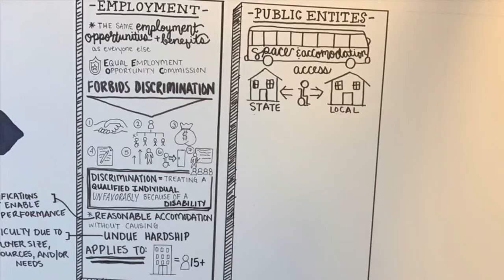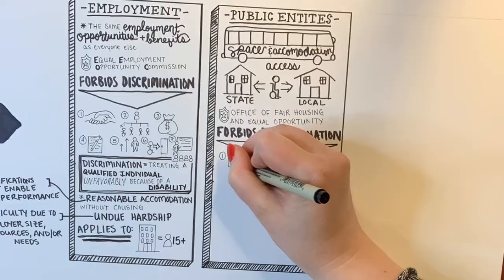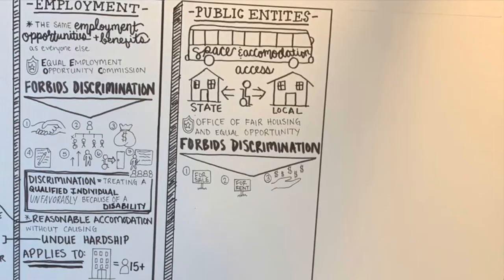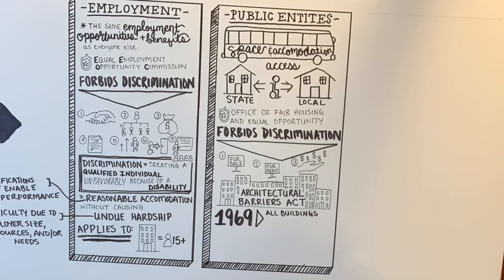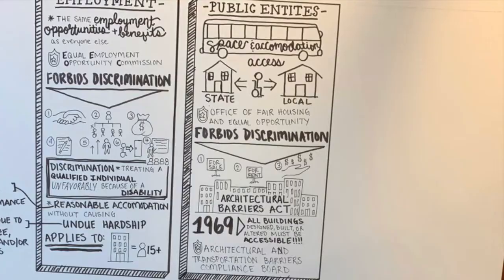Title II is in regards to public entities and public transportation. This section talks about there needing to be space and accommodations for wheelchairs on public transportation, and that people with disabilities need to be able to access all state and local public housing. This title is enforced by the Office of Fair Housing and Equal Opportunity. It also prohibits discrimination in any housing-related transactions like sale, rental, and financing. A really important part of Title II is the Architectural Barriers Act of 1968, which says that buildings designed, constructed, or altered after September of 1969 need to be accessible for people with disabilities. Buildings built before that law usually aren't impacted.